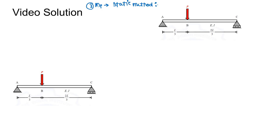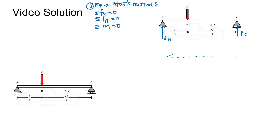For the static method, we have three equilibrium conditions: summation Fx = 0, summation Fy = 0, and moment about a particular point = 0. Due to the point load, there will be reactions Ra and Rc. Drawing the bending moment diagram of this simply supported beam, and since there is no horizontal force, we skip summation Fx = 0.